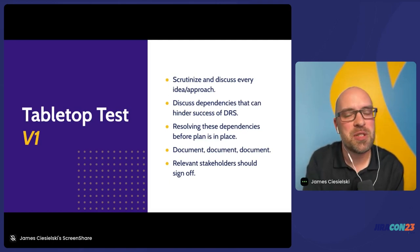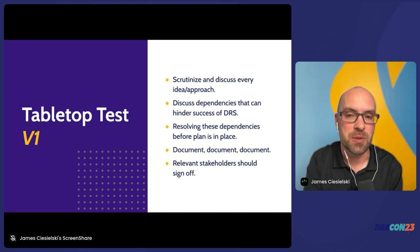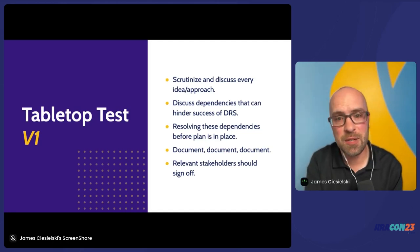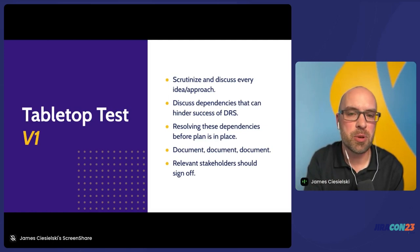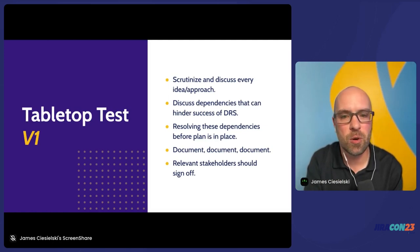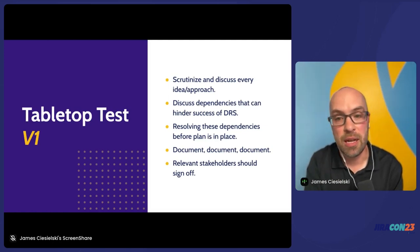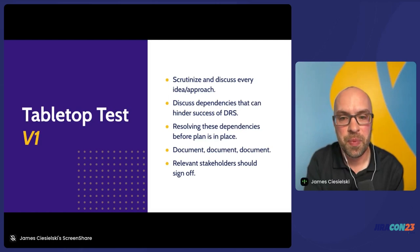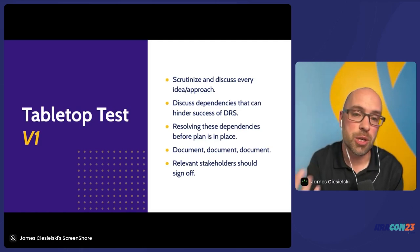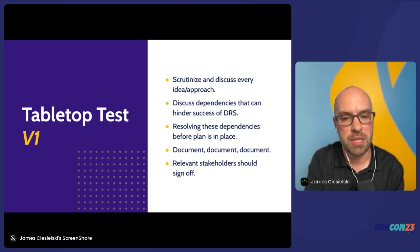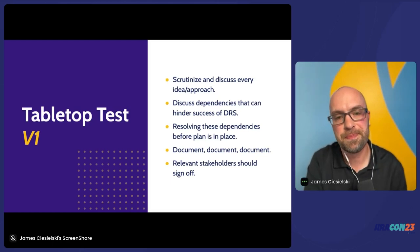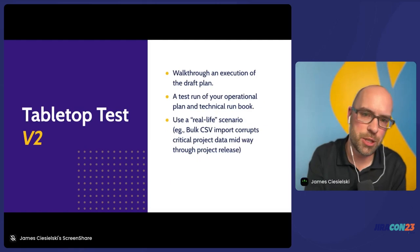As you discover these improvement areas, it's really important to get them rolled back into the disaster recovery strategy itself. Once the group is satisfied, that strategy should be presented back to the relevant business stakeholders and they should ultimately sign off on it. This step is all about ensuring that everyone is aligned with the approach relative to the needs of the business. Next up, we're going to execute this strategy.